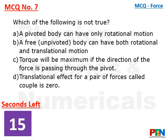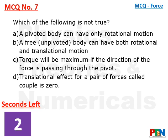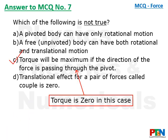Next MCQ: which of the following is not true? Options: a pivoted body can have only rotational motion; a free (unpivoted) body can have both rotational and translational motion; torque will be maximum if the direction of the force is passing through the pivot; translational effect for a pair of forces called a couple is zero. The timer starts. Time's up — the answer is option C: torque will be maximum if direction of the force is passing through the pivot. We need the answer which is NOT true. In fact, torque is zero in this case, so torque cannot be maximum. This is the option which is not true.